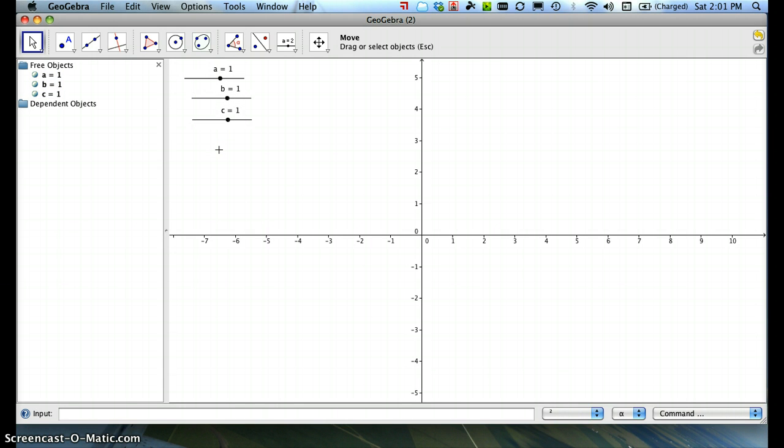So now, after we've got sliders for A, B, and C, we want to graph something. So I'm going to graph, and I'm going to say A. In GeoGebra, you need to put a space or a multiplication symbol, so AX probably won't work. So A space X to the second plus B space X plus C, and I get the graph.